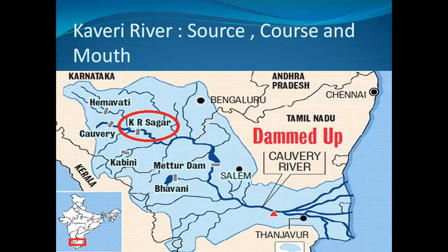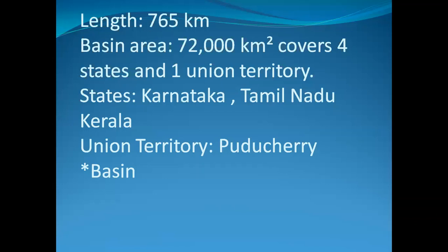The source of Kaveri river is in Karnataka, and it generally flows south and east through Karnataka and Tamil Nadu, and across the southern Deccan Plateau, emptying into the Bay of Bengal. The length of Kaveri river is 765 km, and the basin area is 72,000 km².